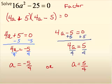Those are my two answers, and again, you may see them written with braces. Negative 5 fourths and 5 fourths.